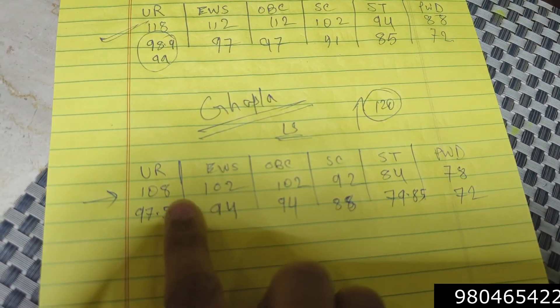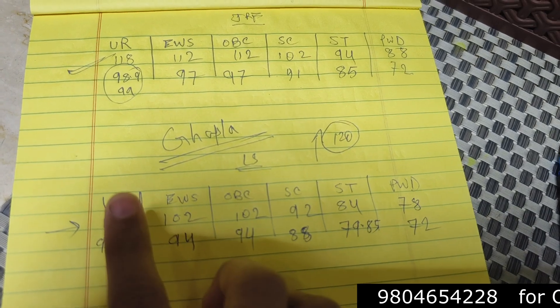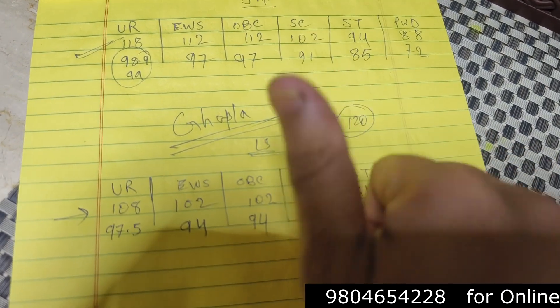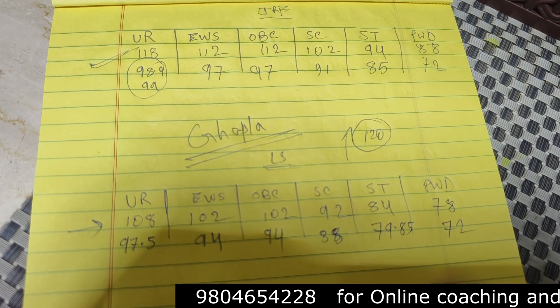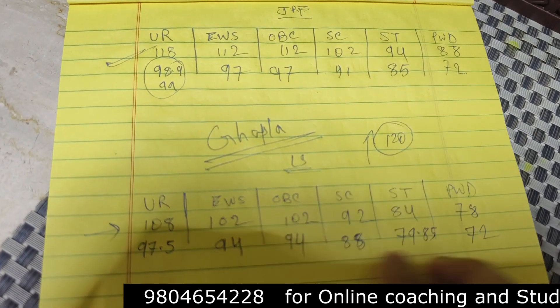So considering that in mind, for unreserved category JRF, and for unreserved 108 as lectureship is a good deal this time. This is my cutoff at Shomu's Biology. We'll see you in the video.